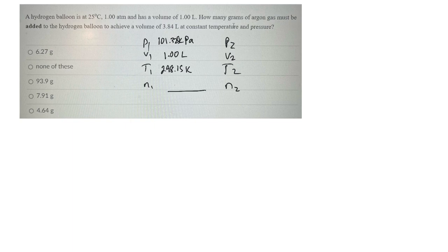And then they say, how many grams of argon gas must be added? Well, they don't tell us any moles of that at constant temperature and pressure. So this one, pressure's constant. Temperature's constant. And what they did is they upped the volume to 3.84 liters.